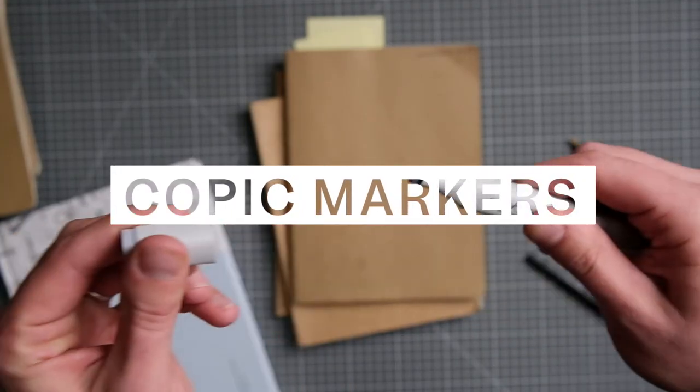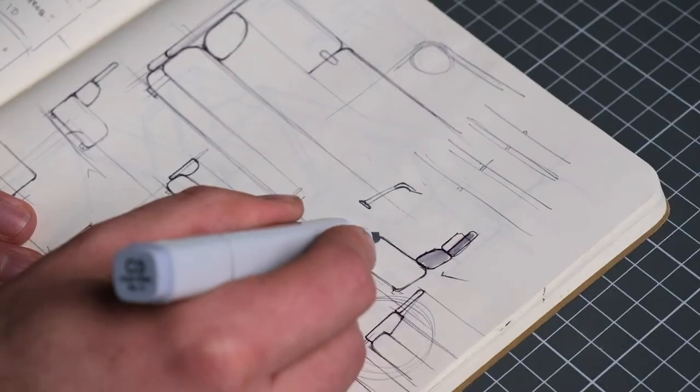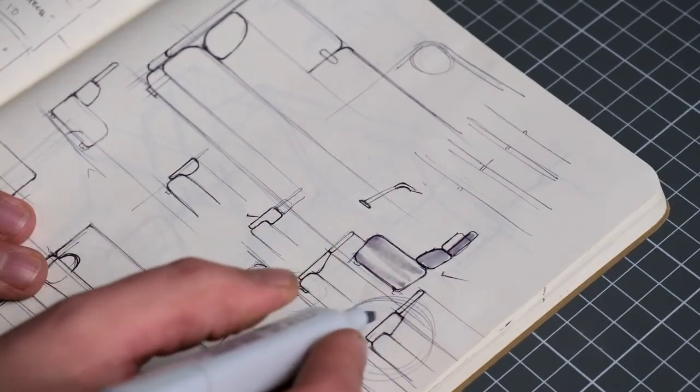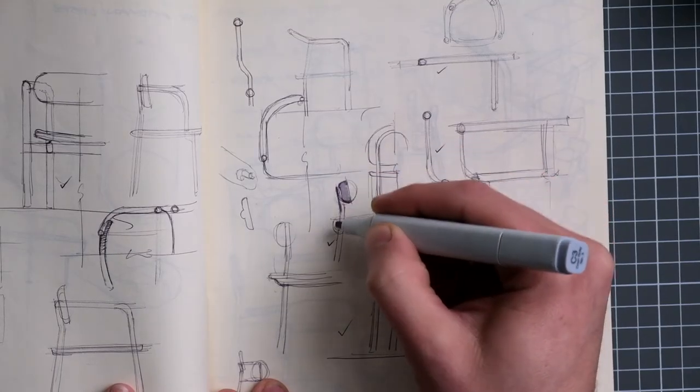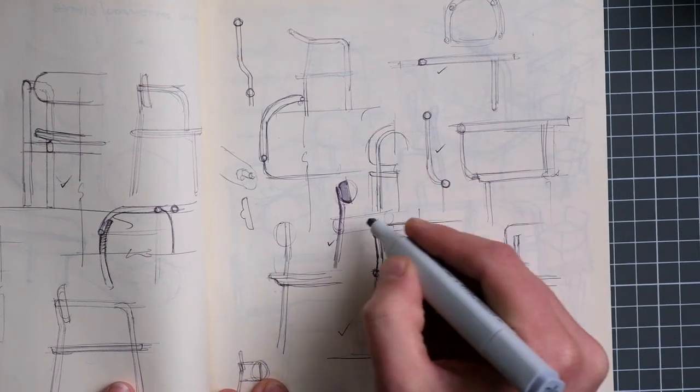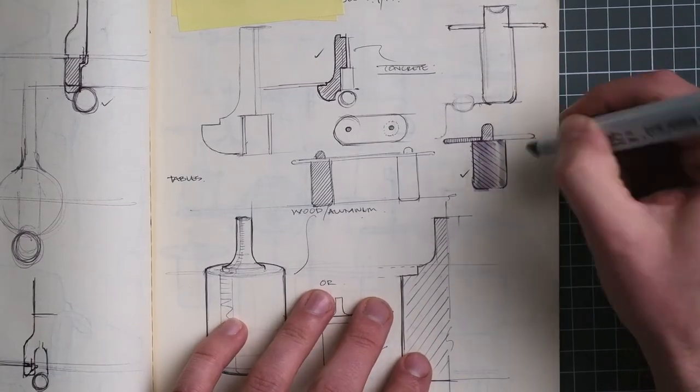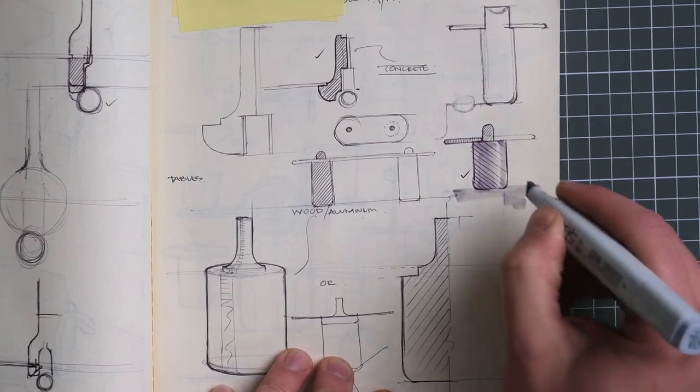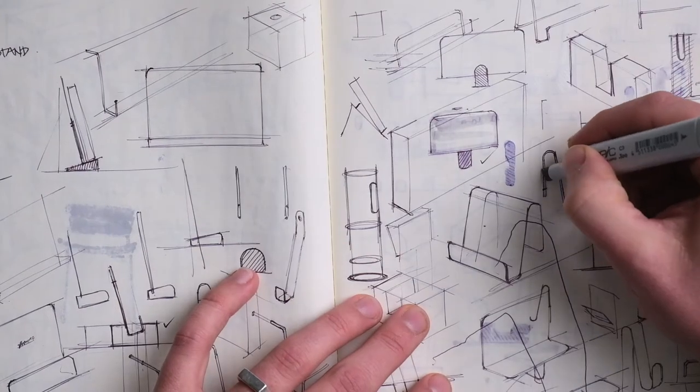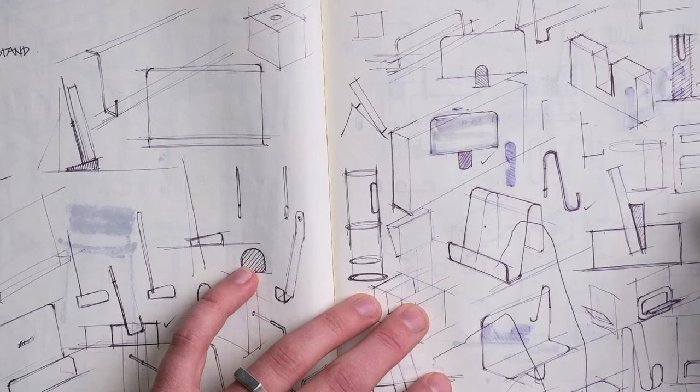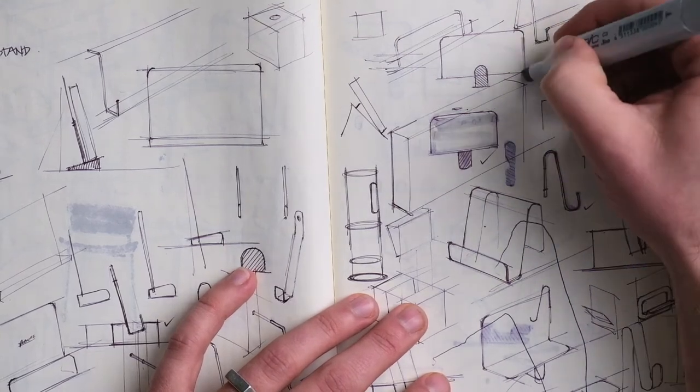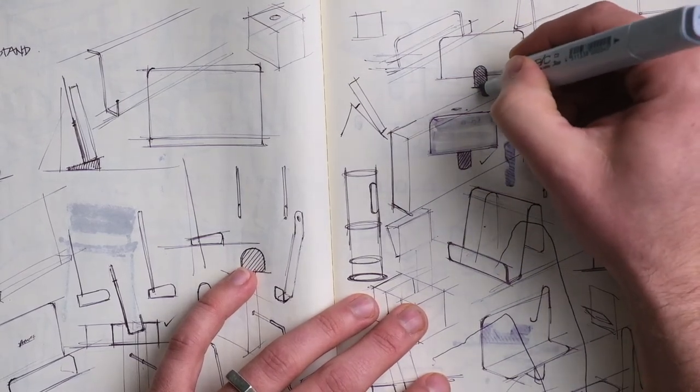Copic markers are an amazing tool that so many designers and creatives use. They work really well with bleed-proof paper and come in a huge array of colors. But for me, I actually just use Copics these days to highlight a particular part of a sketch, adding a little bit of definition and making sure that concept stands out on a page.